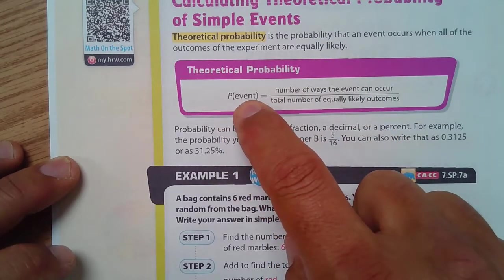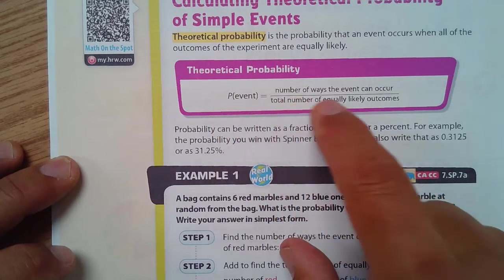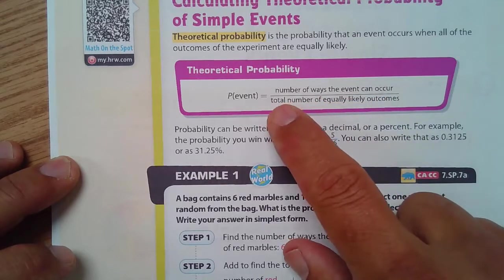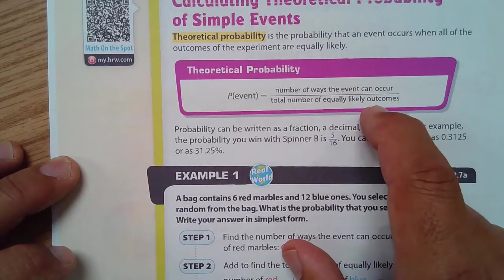The probability of an event, P of an event, is the number of ways the event can occur divided by the total number of equally likely outcomes.